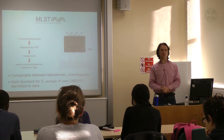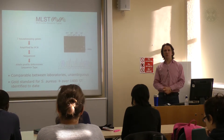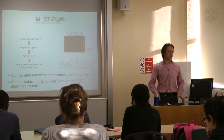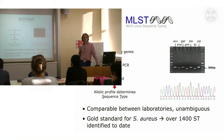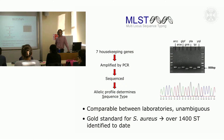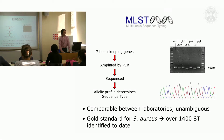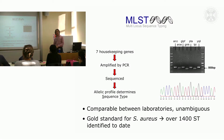A very useful technique traditionally used for looking at population genetics of Staph aureus is MLST — multi-locus sequence typing — which gives you a snapshot of the sequence diversity within the genome. It looks at seven different housekeeping genes and allows you to discriminate between Staph aureus strains. You define a new sequence type by the fact that it differs at at least one single nucleotide among those seven housekeeping genes.